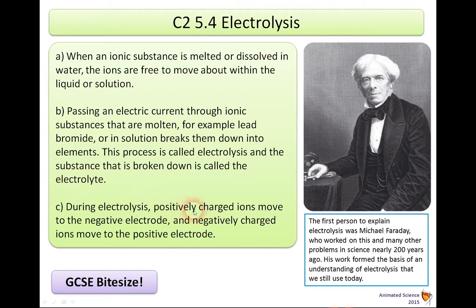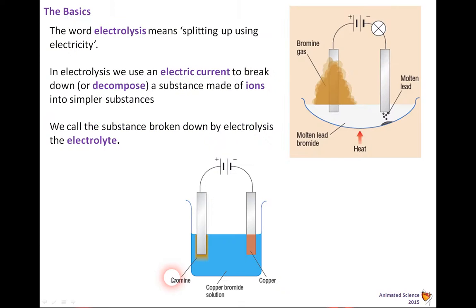During electrolysis, positively charged ions move to the negative electrode and negatively charged ions move to the positive electrode. The first person to explain electrolysis was Michael Faraday, a physicist who worked on this and many problems nearly 200 years ago. His work formed the basis of an understanding of electrolysis that we still use today. Some really good stuff as well from GCSE Bitesize for this topic.